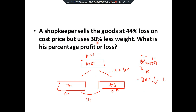Question 10: 'A shopkeeper sells goods at 44 percent loss on cost price but uses 30 percent less weight. Find his percentage profit or loss.' Note: the answer is not always profit — sometimes it can be a loss. Take actual weight as 100. Selling price = 100 − 44 = 56. Cost price = 100 − 30 = 70. Since cost price (70) is greater than selling price (56), this is a loss. Loss percentage = (70 − 56)/70 × 100 = 20 percent loss.